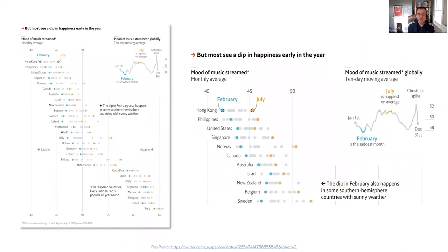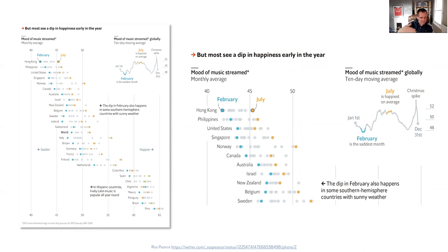This next piece is from The Economist by Ross Pearce, and it looks at the mood of music as streamed by different people around the world. On average, February is the saddest month based on the mood of music streamed globally, and July is generally the happiest month overall with a particular spike around Christmas. But when you break it down by each country, you can see quite sad music being the dominant theme for Hong Kong, and then Peru is a very, very happy country — even the saddest music there is far more uplifting than most other countries across most months of the year.